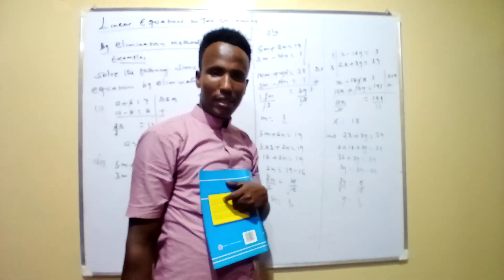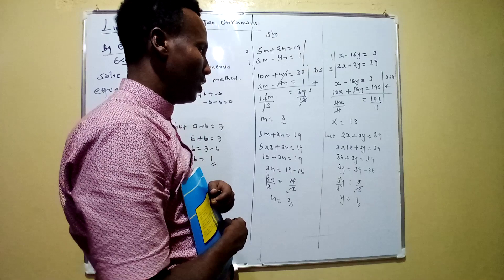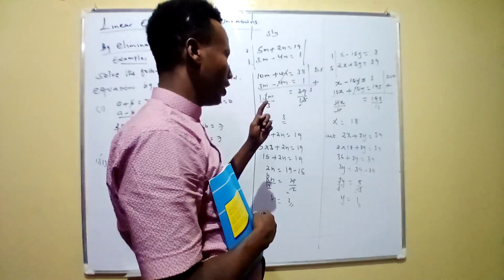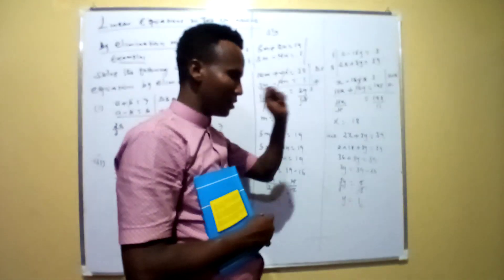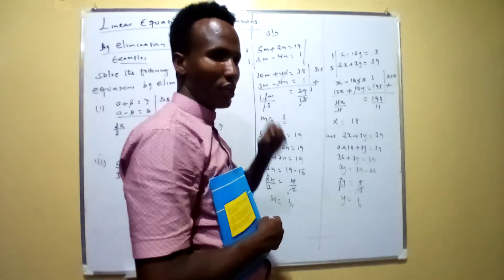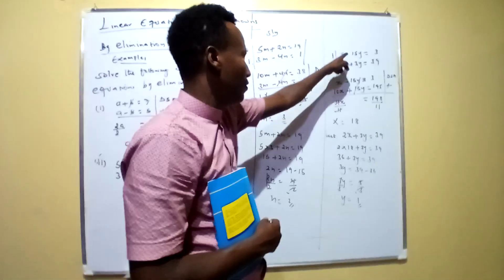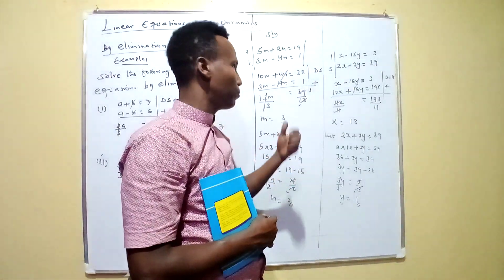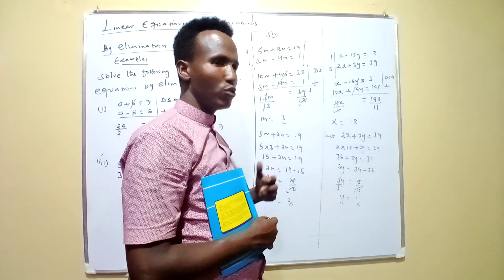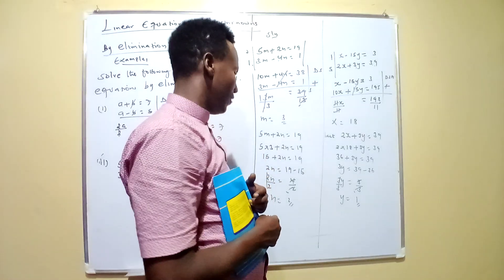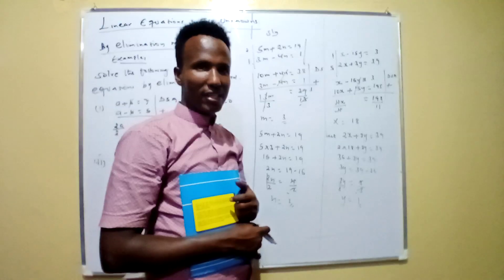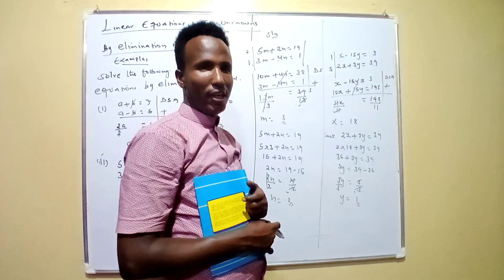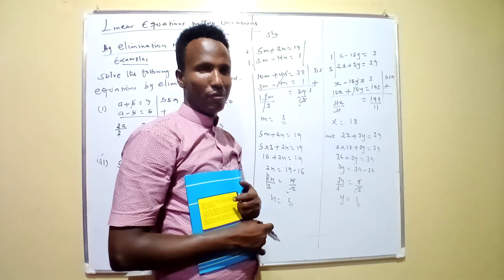This is how we solve simultaneous equations using the elimination method. Remember: make the middle numbers the same, then check the sign. If the signs are the same, you subtract; if they differ, you add. That's all for today's class — meet you next time.